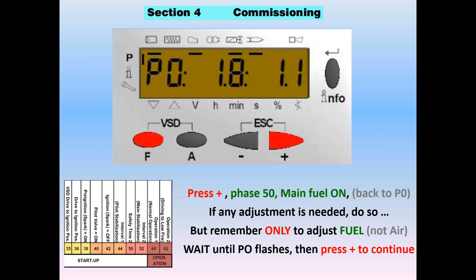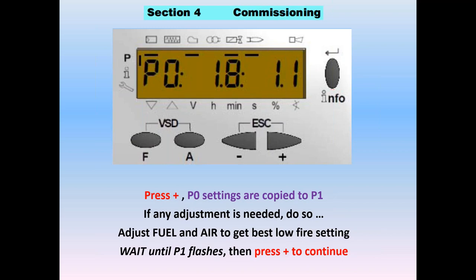Press plus to continue. We have P0 with values of 1.8 gas and 1.1 air — what we ended up with. Press plus, and it will automatically copy those settings to P1. P1 was empty before, and it brings over those exact same ignition settings as a courtesy. On P1, we have the ability to make adjustments to air or fuel at low fire. Ignition may have been very rich or very lean — adjust to whatever gives a repeatable light-off every time. We're not overly concerned with exact combustion on ignition; we just want a strong, steady, repeatable light-off.